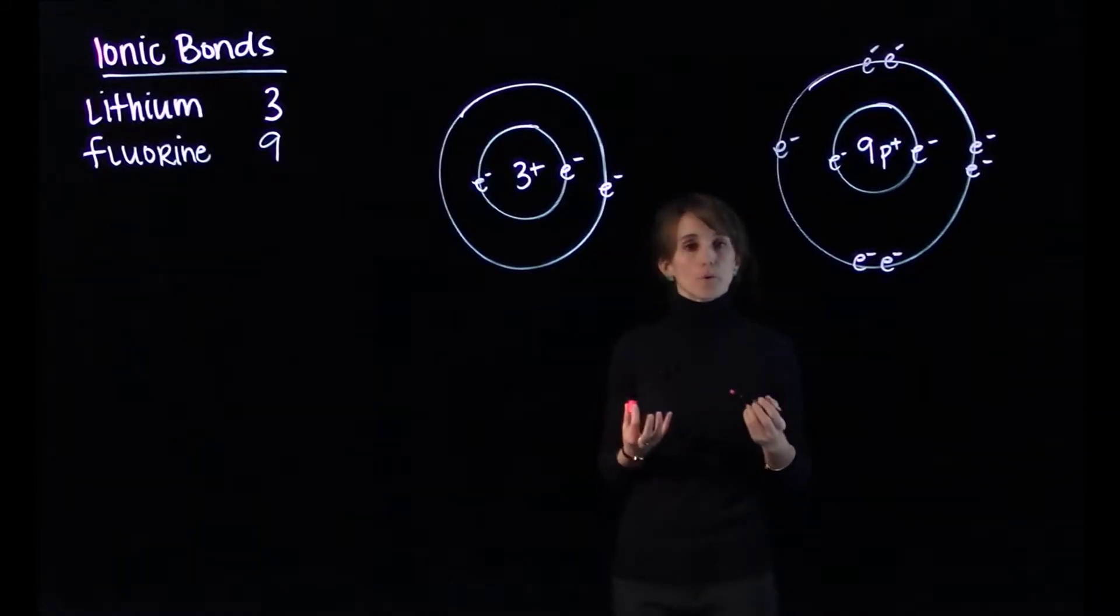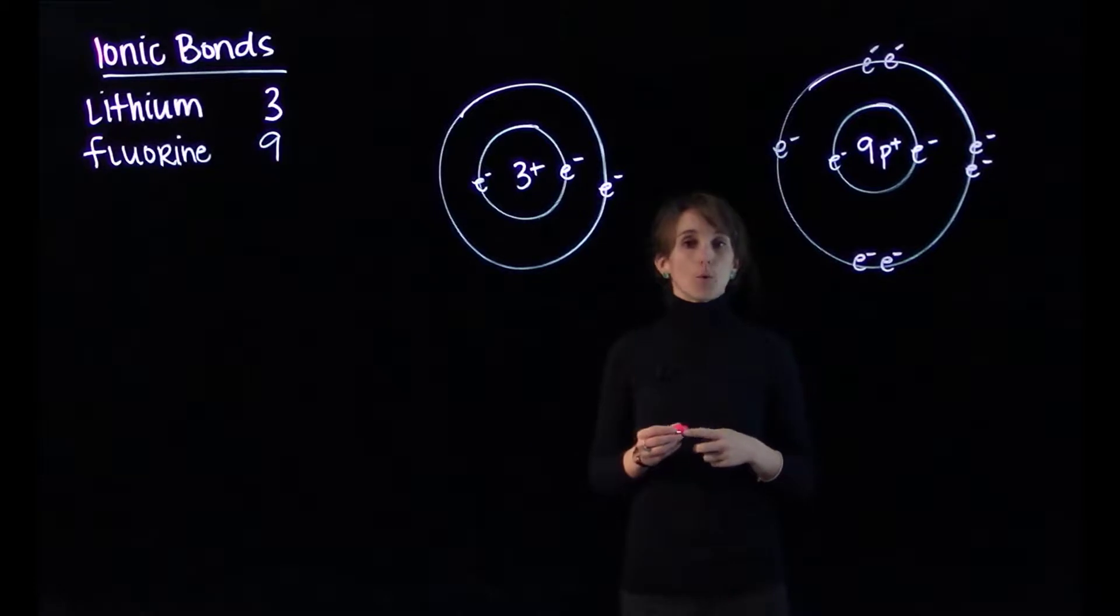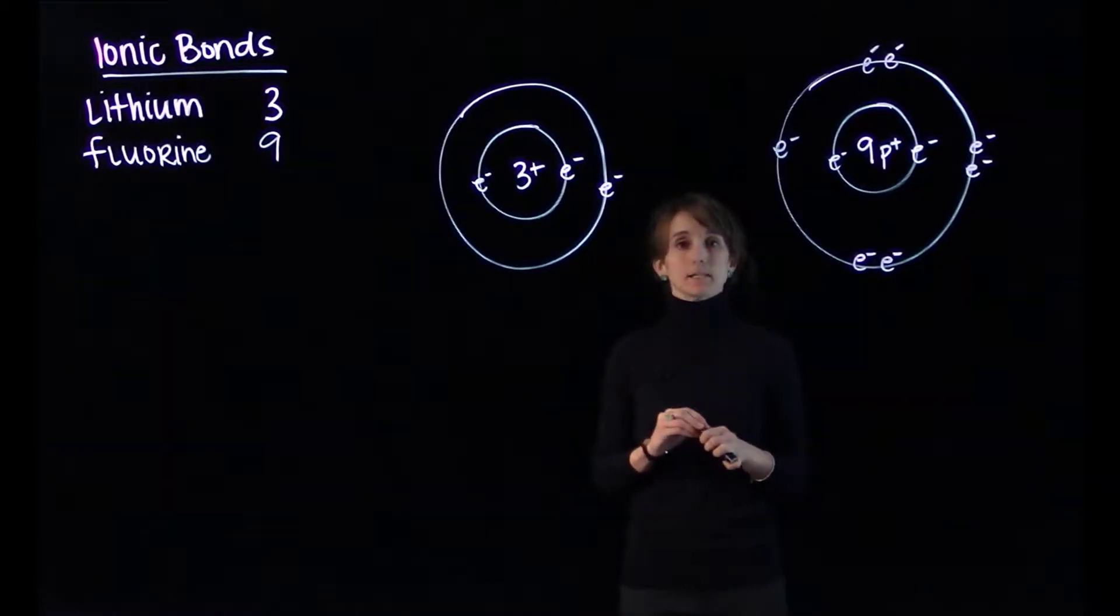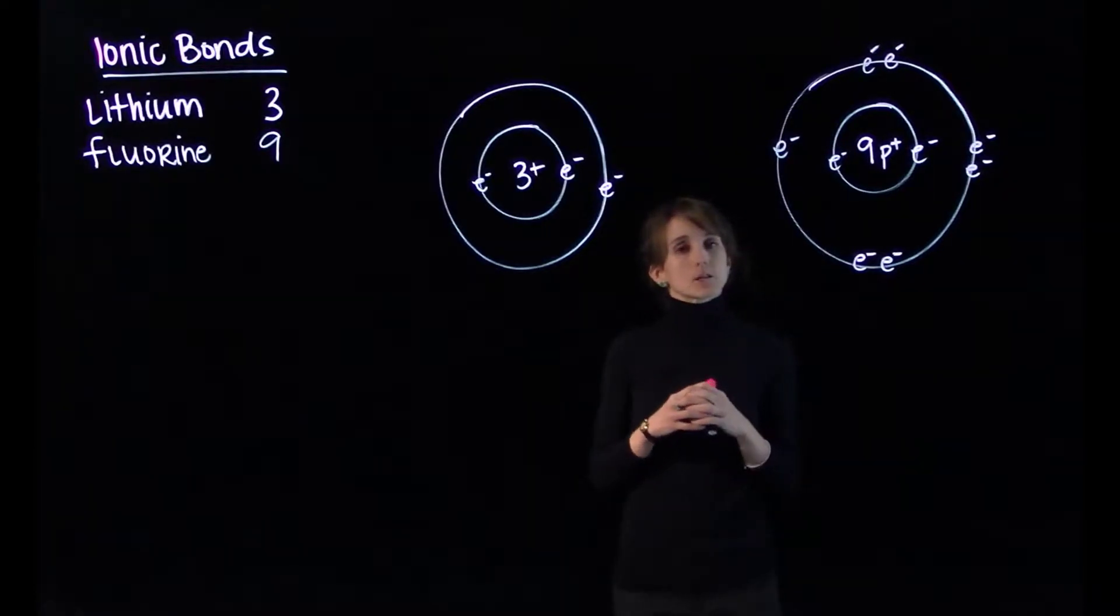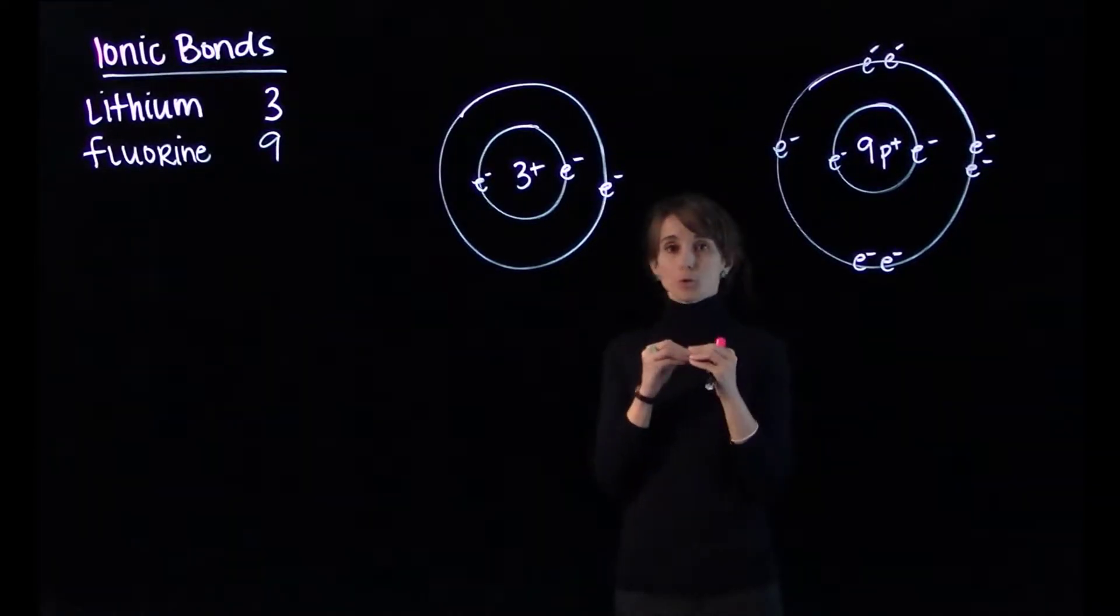Now, if we look at both of these atoms, these atoms are both unstable. They both have vacancies in their outermost shell. So a chemical bond is essentially a way of binding two or more atoms together so that each of them can have a full outer shell of electrons.